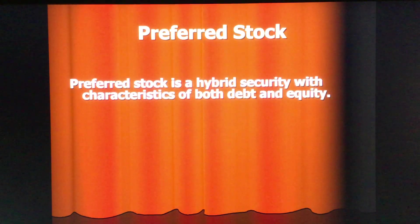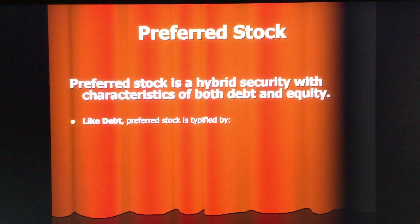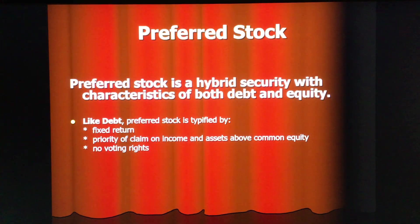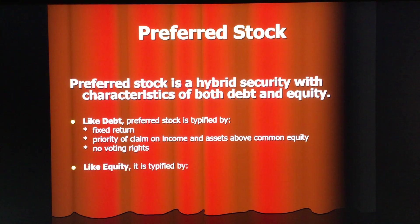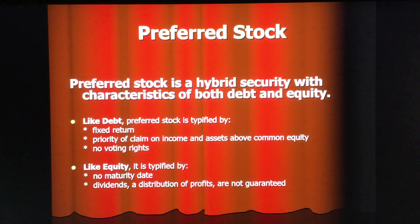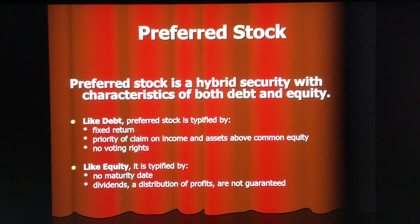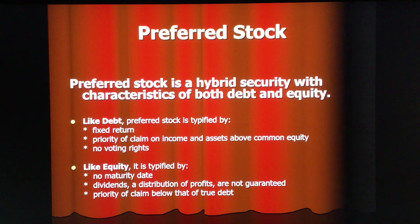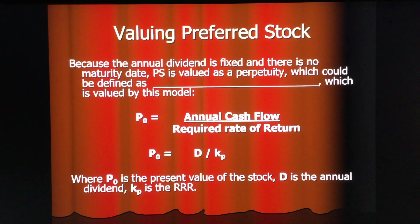Preferred stock fits in between debt and common stock and has some features of both — we term it a hybrid security. Like debt, preferred stock is characterized by a fixed return and priority of claim on income and assets above common equity, and it has no voting rights. Like equity, it has no maturity date, an infinite term, and dividends — distributions of profits — are not guaranteed. It pays dividends, not interest, and its priority of claim is below that of true debt.